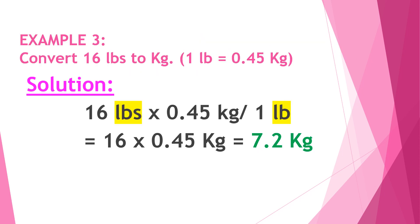Example number three: Convert 16 pounds to kilograms. Our conversion factor is 1 pound equals 0.45 kilogram. Solution: 16 pounds times 0.45 kilogram over 1 pound — make sure the unit that needs to be cancelled out is at the bottom. I highlighted them in yellow so it would be easier for you to identify. 16 times 0.45 is equal to 7.2 kilograms.